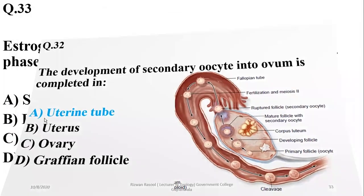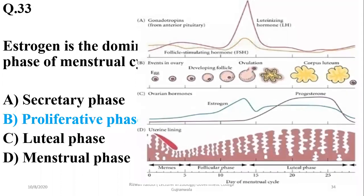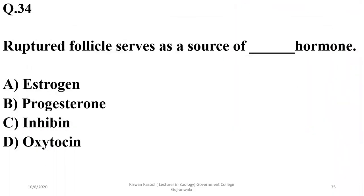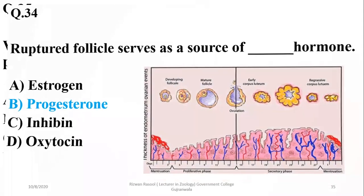Number thirty-three: estrogen is the dominant hormone during the proliferative phase, while during the secretory or luteal phase there is the dominance of progesterone, and the ovulation phase is dependent upon the peak of LH. Ruptured follicles are the source of progesterone, which is responsible for further thickening of the endometrium during the secretory or luteal phase.